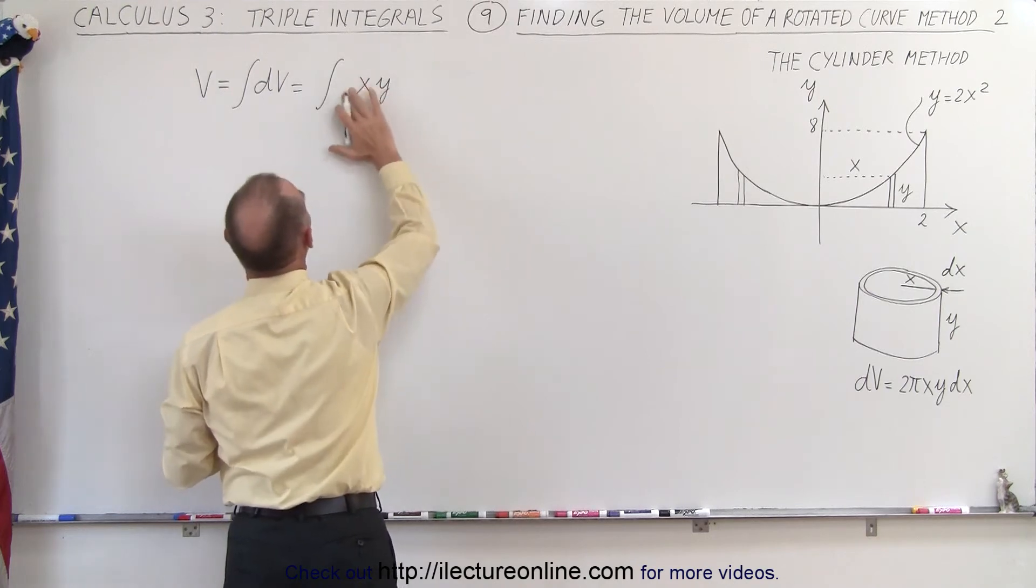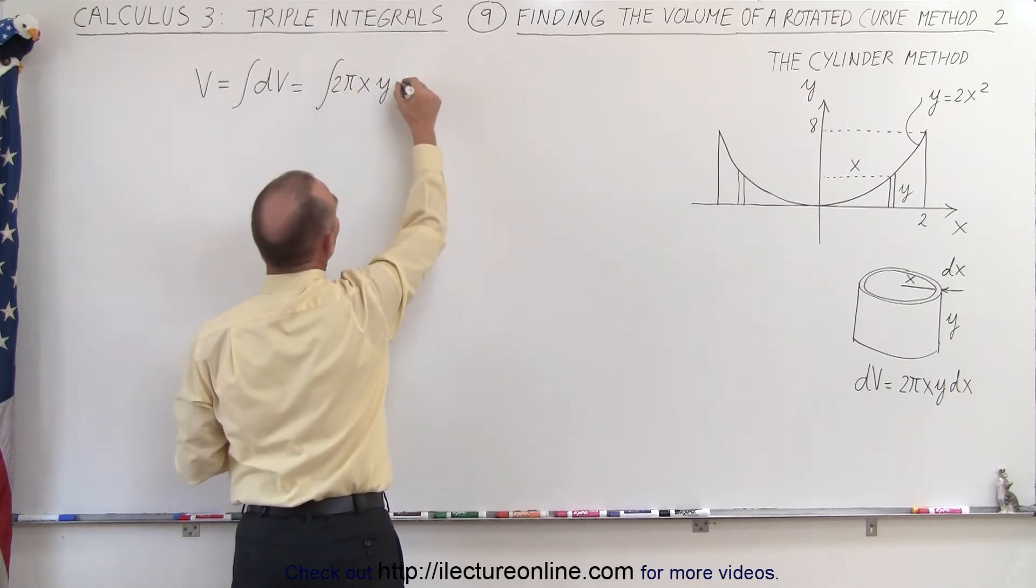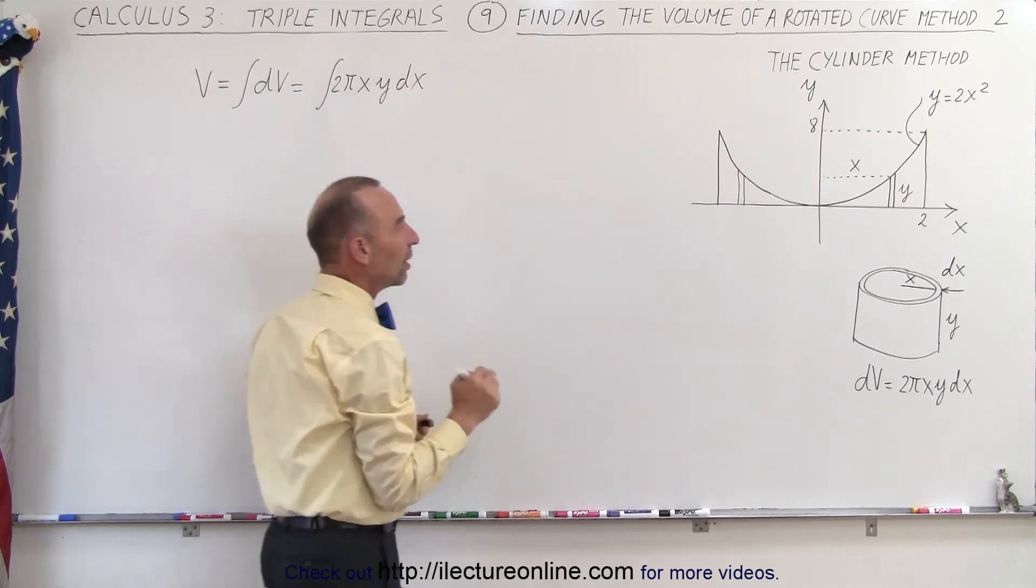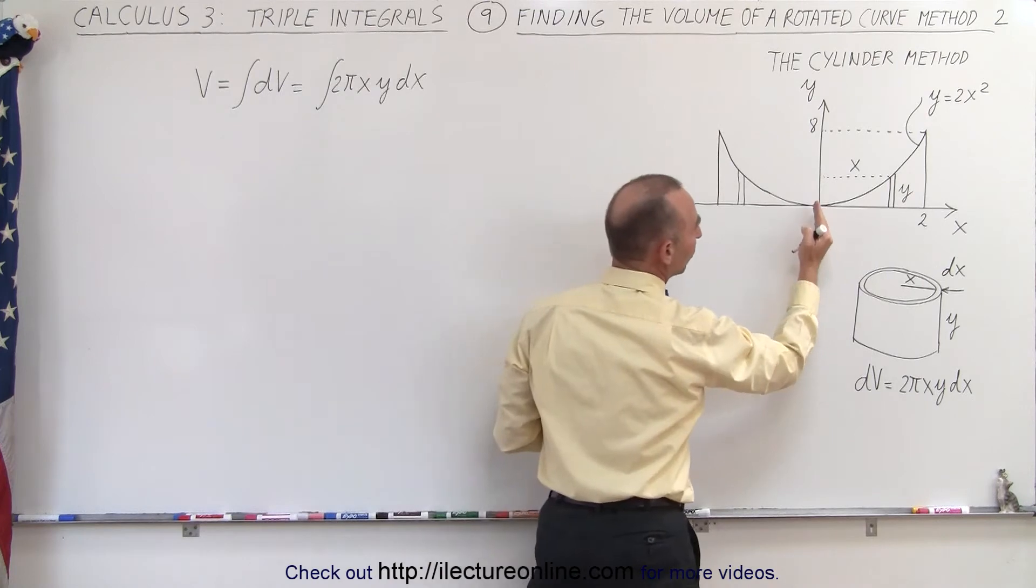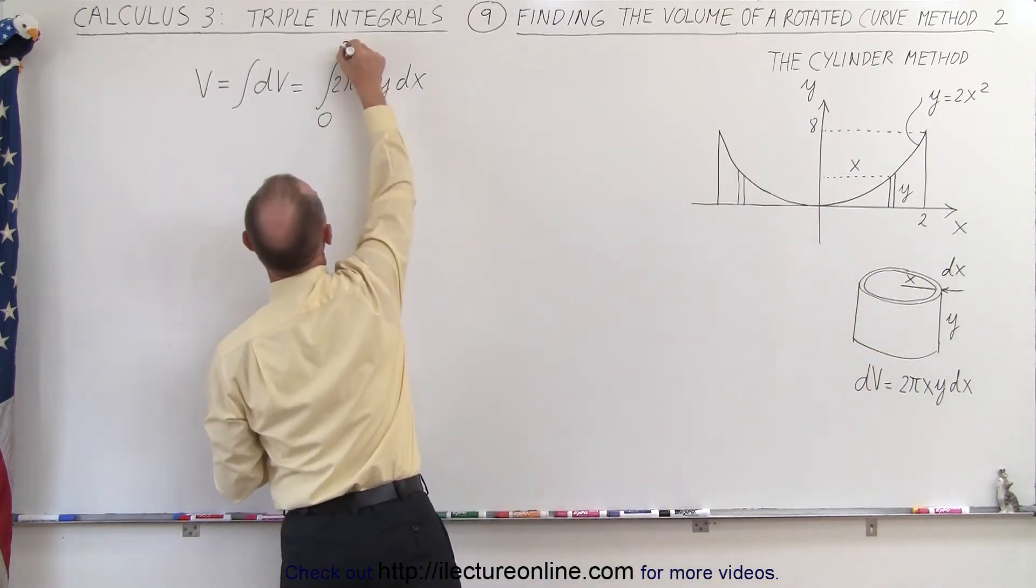I'm forgetting a pi there. So, 2 pi x y times a dx, and our limits of integration now would be from x equals 0 to x equals 2, so it would be from 0 to 2.